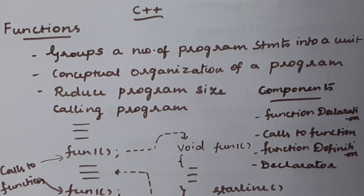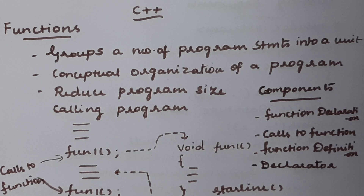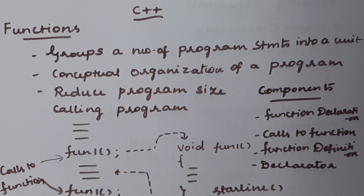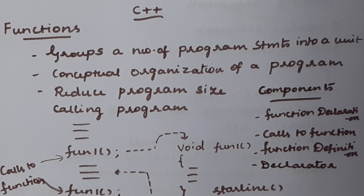So what is the reason for having functions in a programming language? Functions will provide some organization to a program, which means they provide a specific structure — conceptual organization of a program. Another reason is that functions will reduce the program size. If you have some set of statements that you want to execute more than once and you repeatedly include those statements in your program, it will increase the length and size of the program.